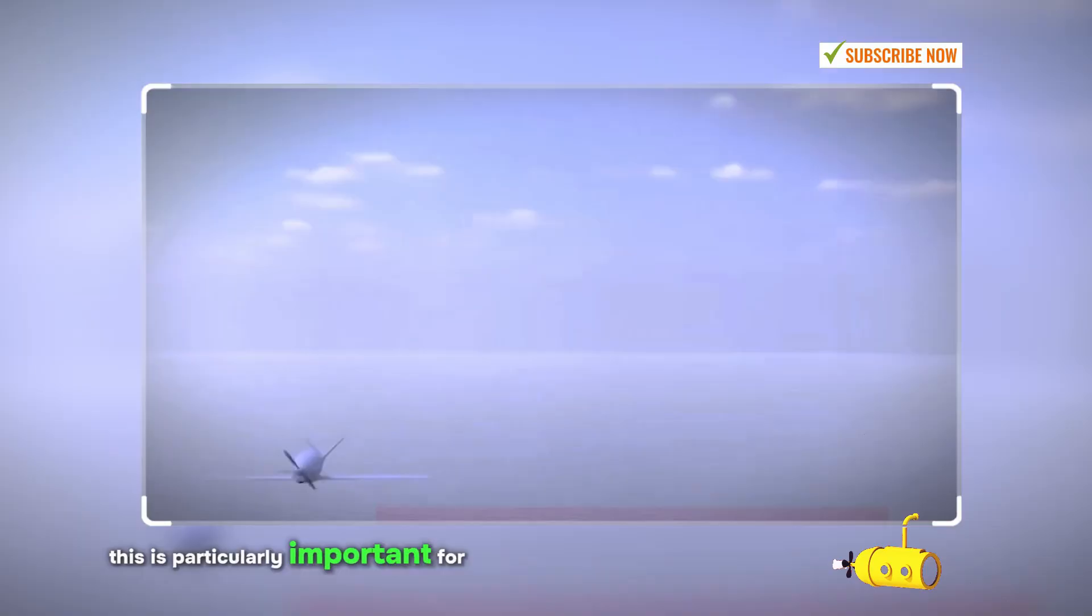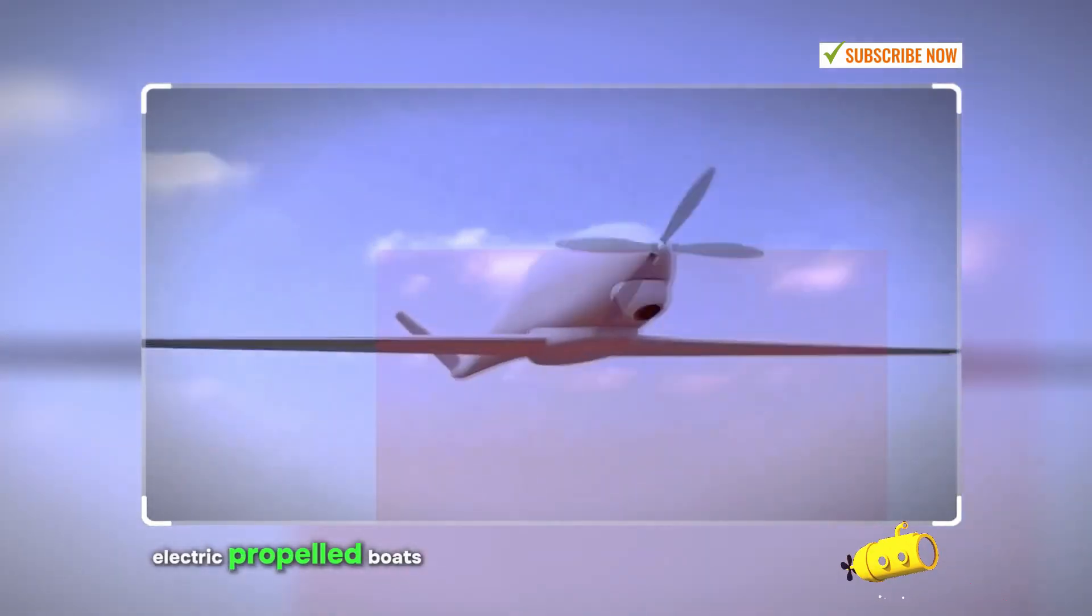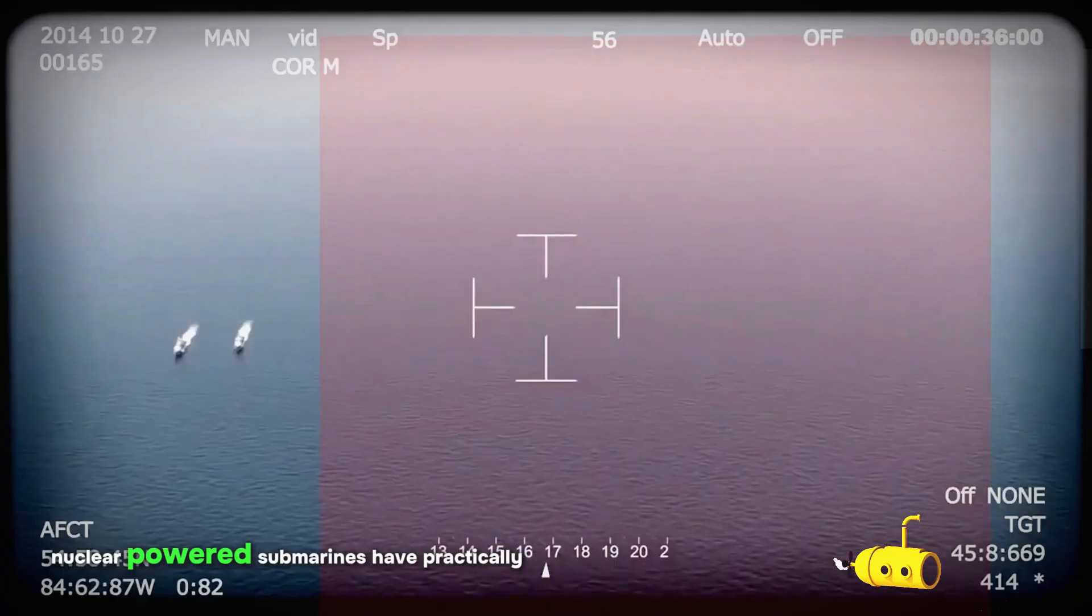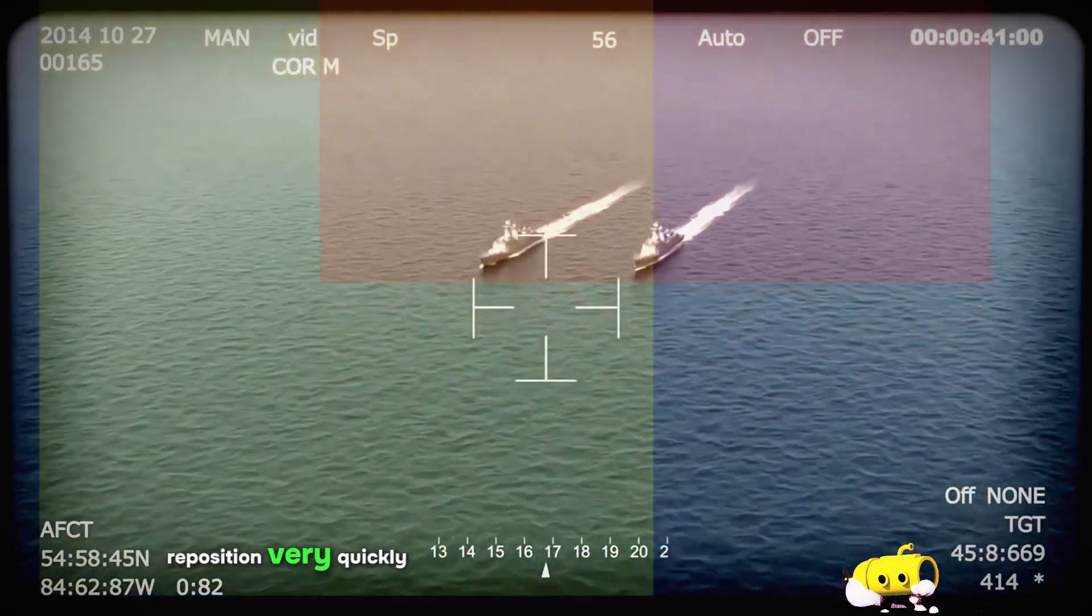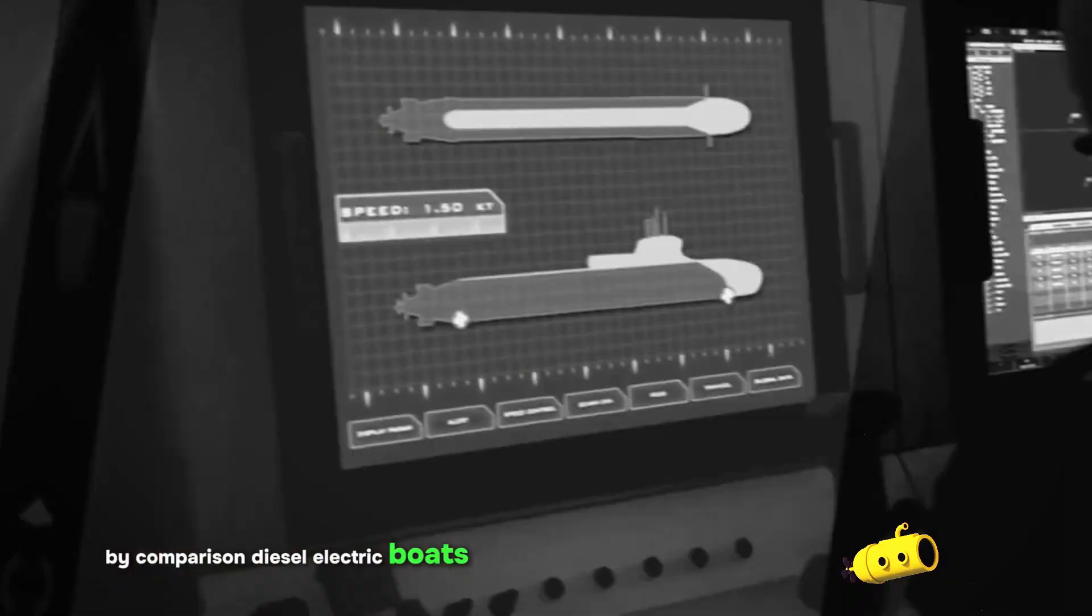This is particularly important for diesel-electric propelled boats. Nuclear-powered submarines have practically unlimited high-speed endurance and can reposition very quickly. By comparison, diesel-electric boats are slow.